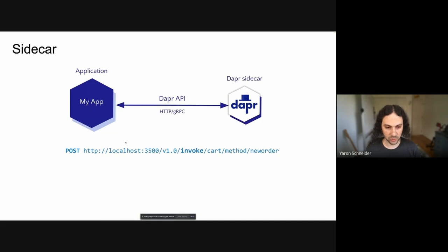And here are some examples of how these look like. So for example, here the application will call localhost and it's going to tell Dapper, hey Dapper, please invoke the cart application for me on the method new order. And this is an example of state. So the application is basically telling Dapper, hey Dapper, please fetch the item 67 state for me from a key value store that I configured you to work with.